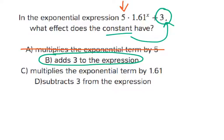C multiplies the exponential term by 1.61. That's probably referring to this 1.61 here. It's part of the exponential term. It's not multiplying anything by 1.61, so we're probably not going to use that one. It definitely has nothing to do with the constant.